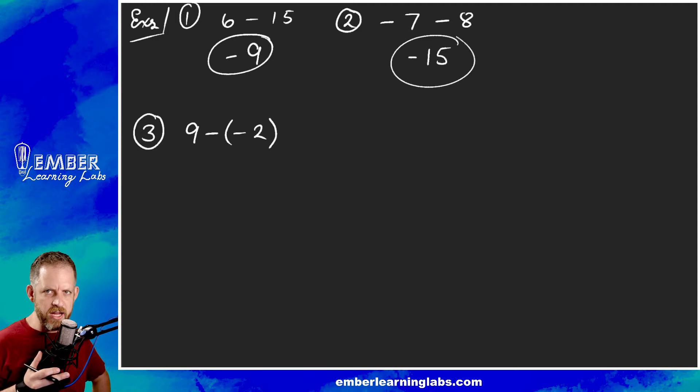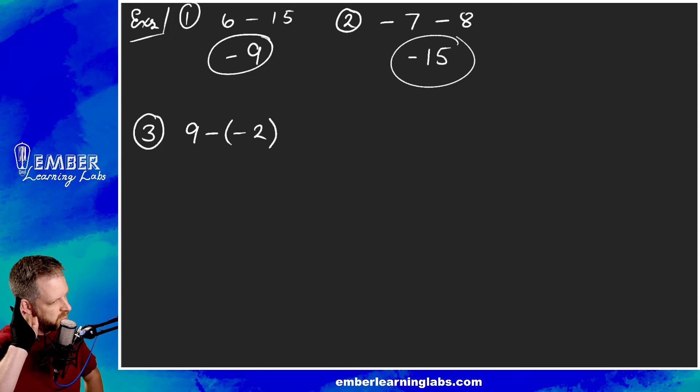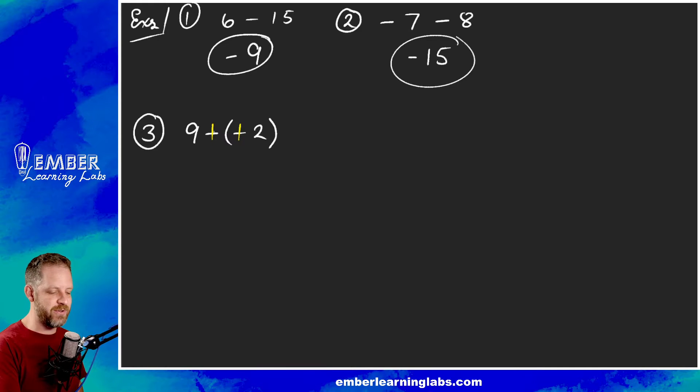Everybody say ka-chink ka-chink! When we see two minuses right next to each other, we ka-chink ka-chink, which turns those minuses into plus. So now we've got 9 plus 2. The signs are the same, so we're gonna add and keep the sign. So it's 11, and since we're keeping the sign it is positive 11.